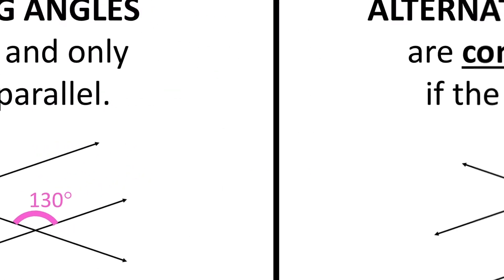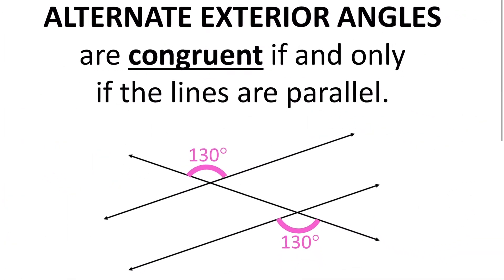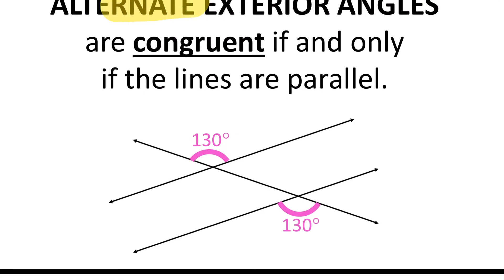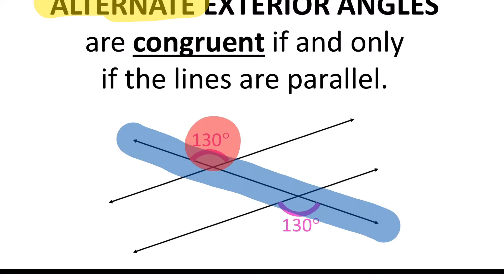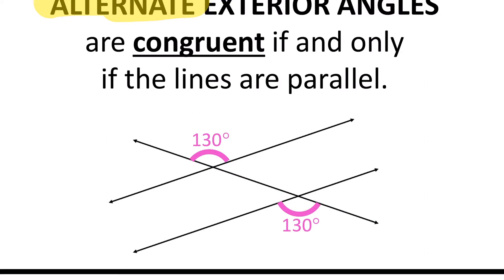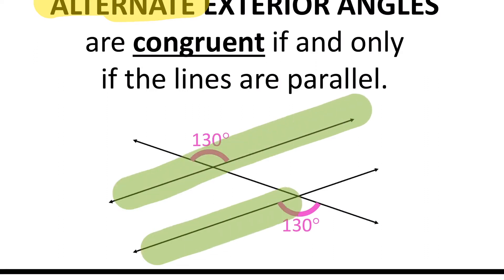Next, we are going to look at alternate exterior angles. Alternate means that they're going to be kind of crisscrossed from each other. So here, this one is on the right side of the transversal, but this one is on the left side of the transversal. What I mean by that is — here's the transversal, and this angle is on the top of the transversal, and this one's on the bottom of the transversal. So they are alternate from each other. We also call them exterior, because if I look at my parallel lines, the two angles are on the outside of those parallel lines. So they are exterior — alternate exterior angles.